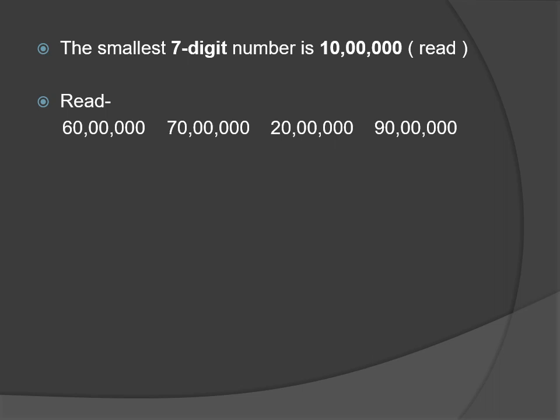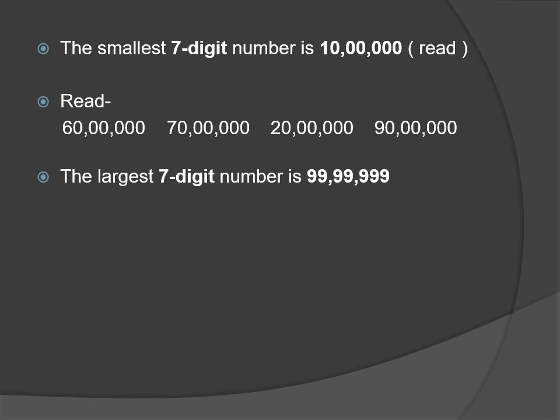Read some more numbers belonging to 10 lakh: 60 lakh, 70 lakh, 20 lakh, 90 lakh. Similarly, the largest seven-digit number has seven nines — that means 99,99,999.